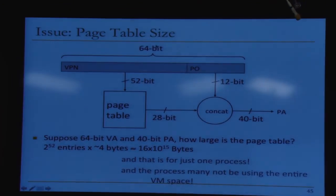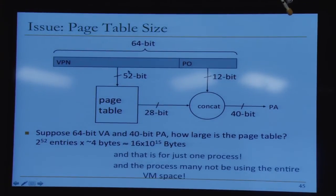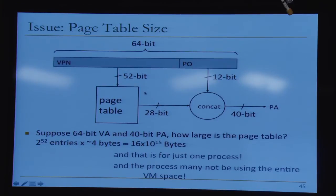To access the page table you need translation, but translation requires the page table — as long as the base page table is in physical memory, this works. For a 64-bit virtual address space and 40-bit physical address space with 4KB pages: page offset = 12 bits, physical frame number = 28 bits, and you need 2^52 entries per process — demonstrating why multi-level page tables are essential.